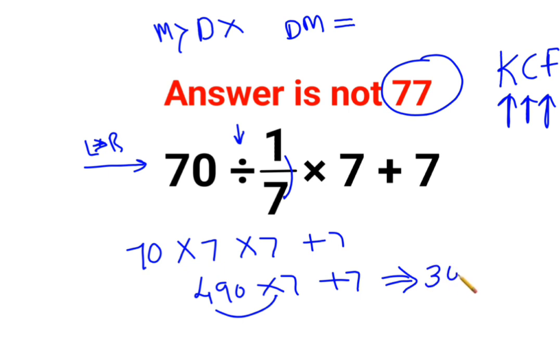So that gets you 3430 plus 7. The answer for this question is 3437.